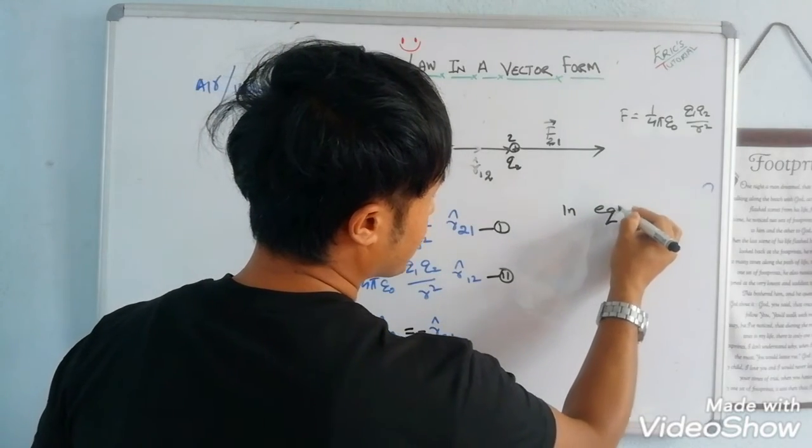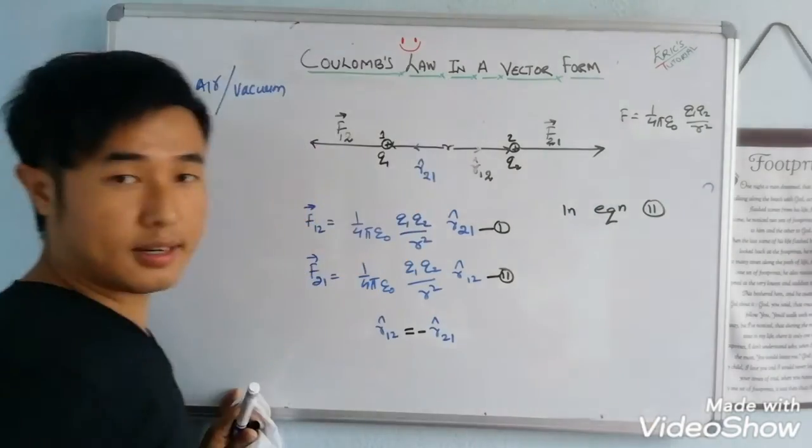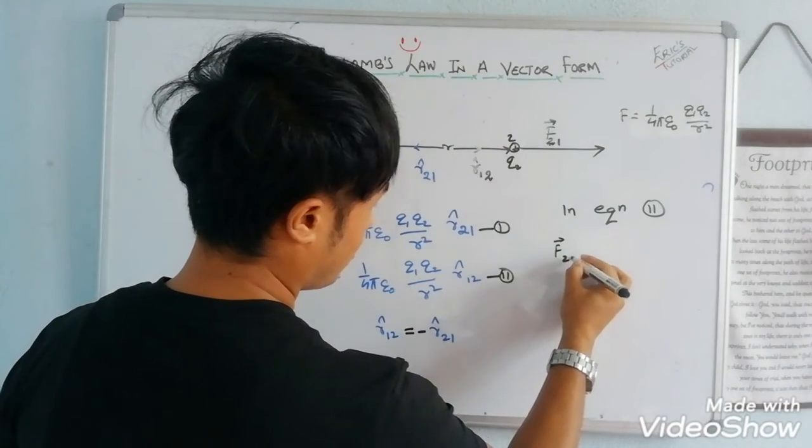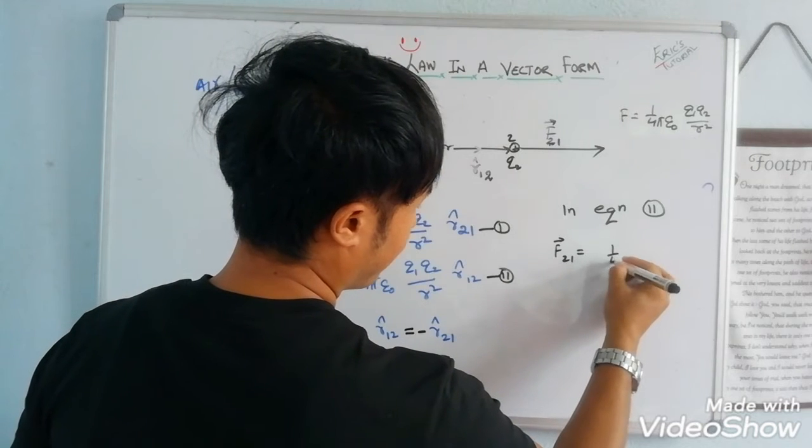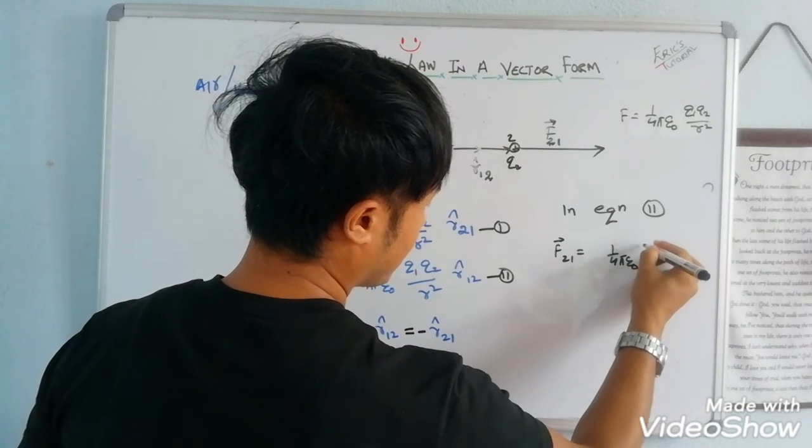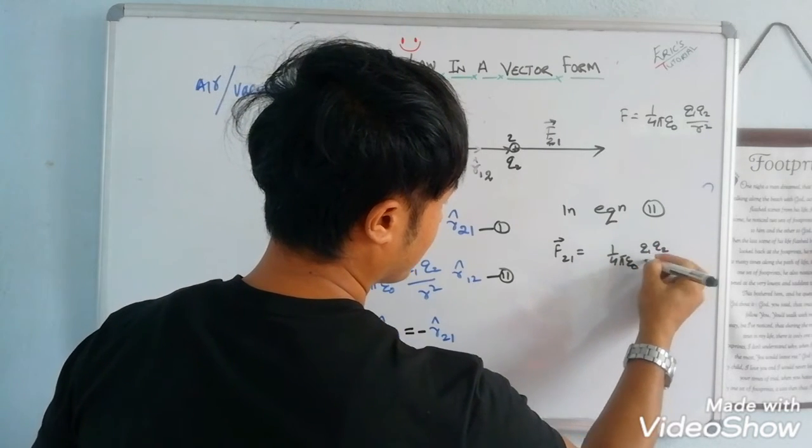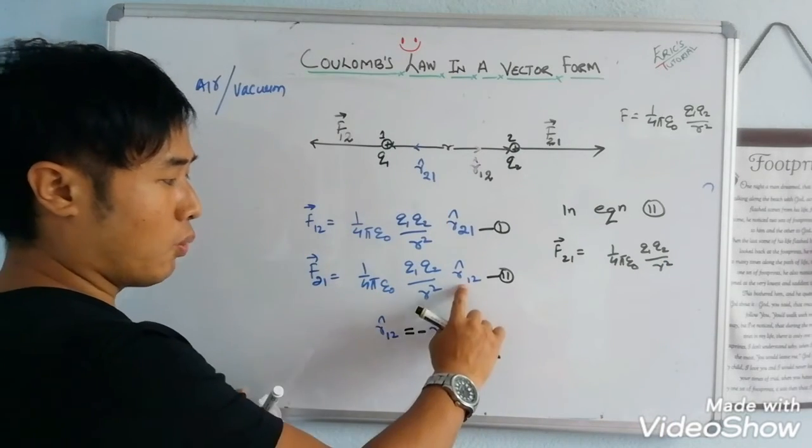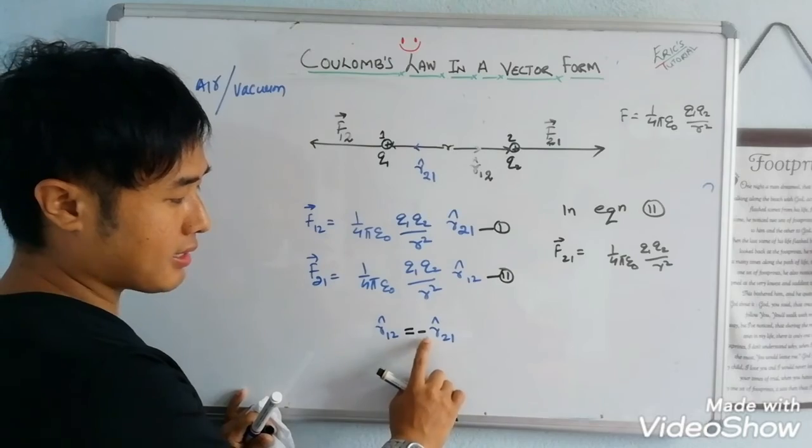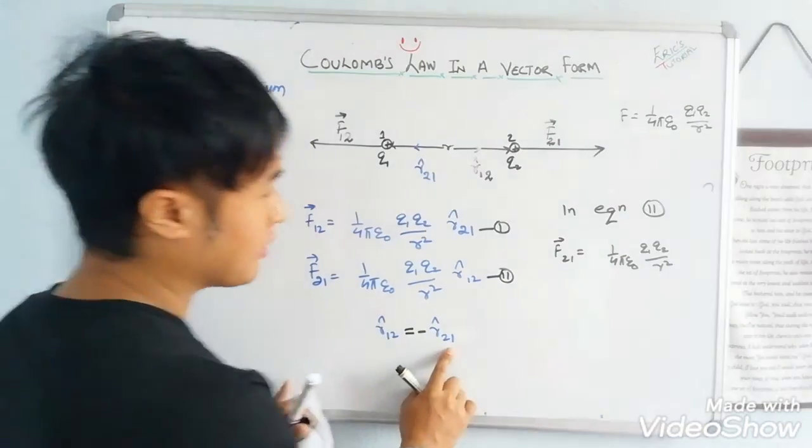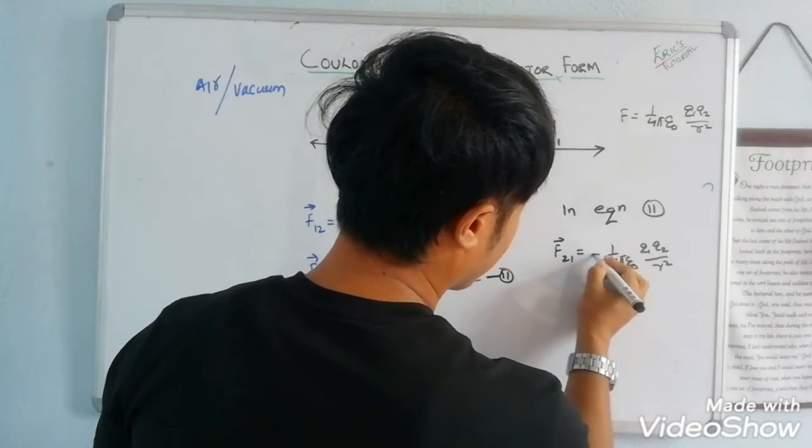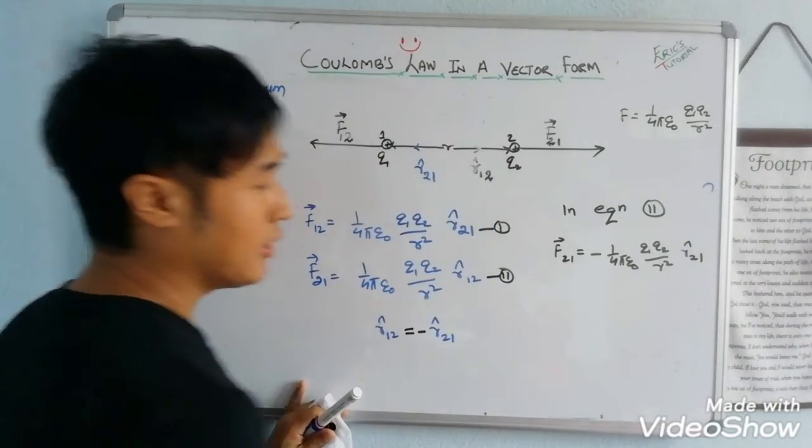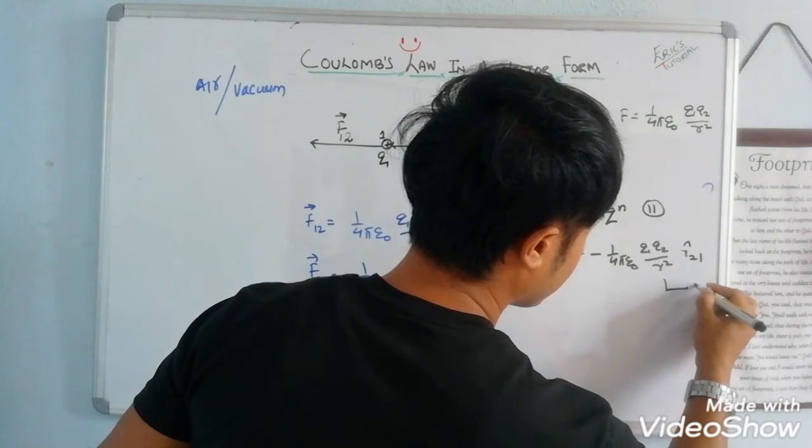In equation 2, replacing the R cap value. F vector 2,1 equals to 1 by 4πε₀, q1 q2 by r square. In place of R cap 1,2, I can simply write minus R cap 2,1. Minus comes in front. This is my equation 3.